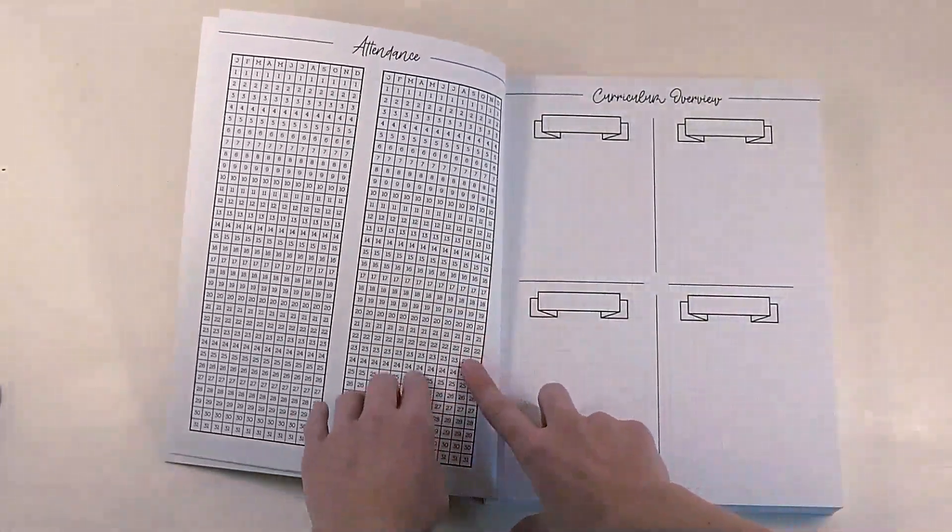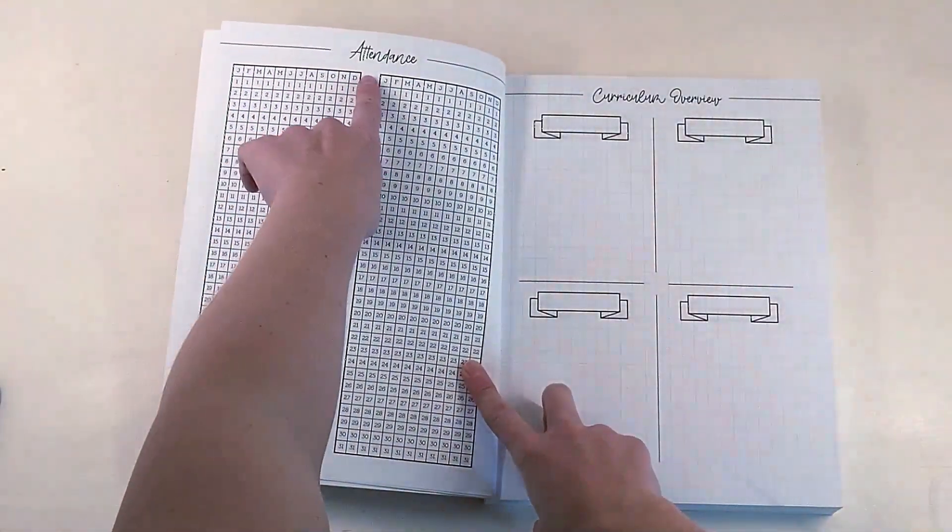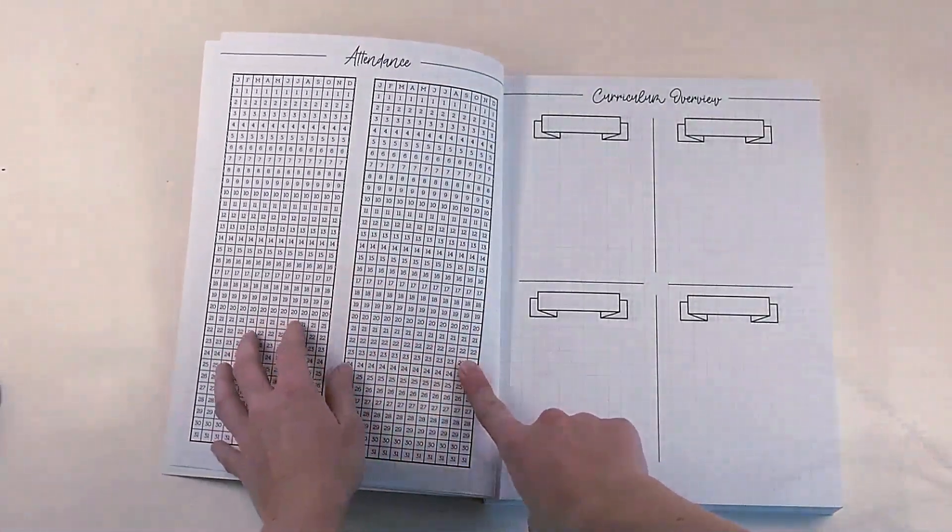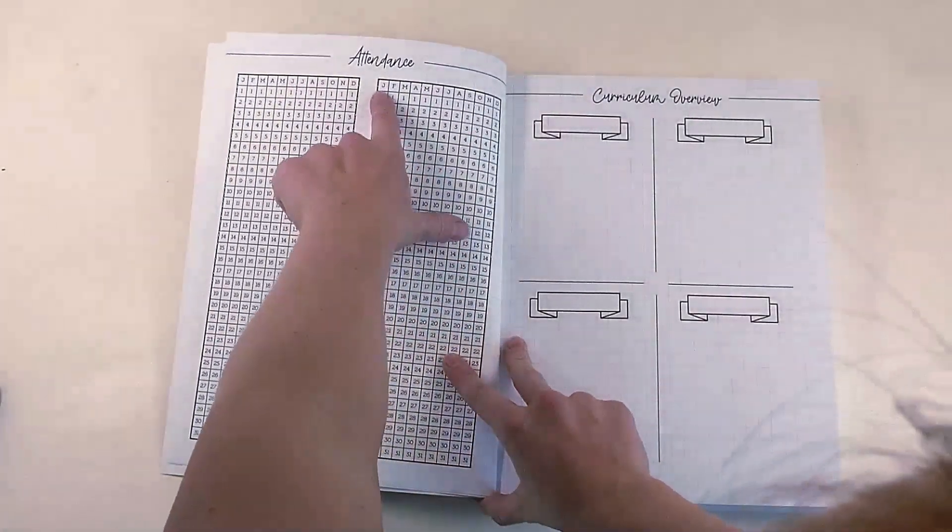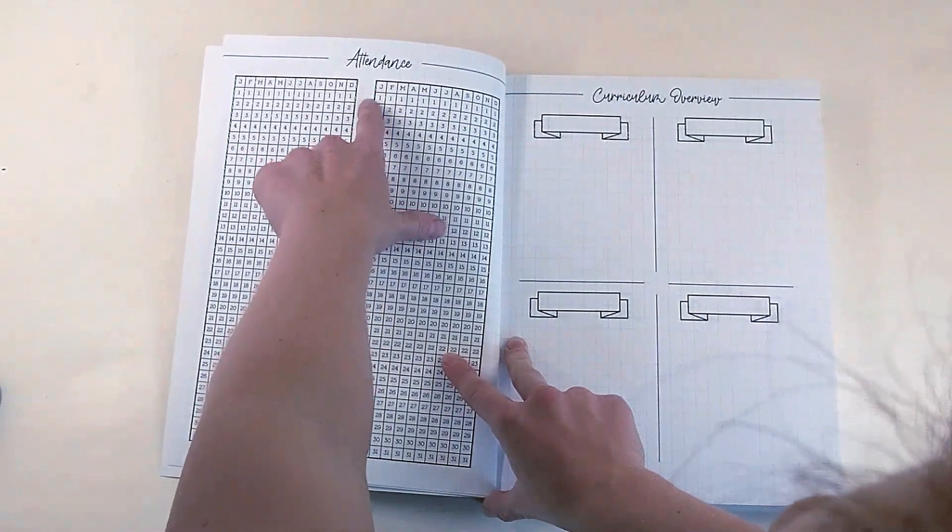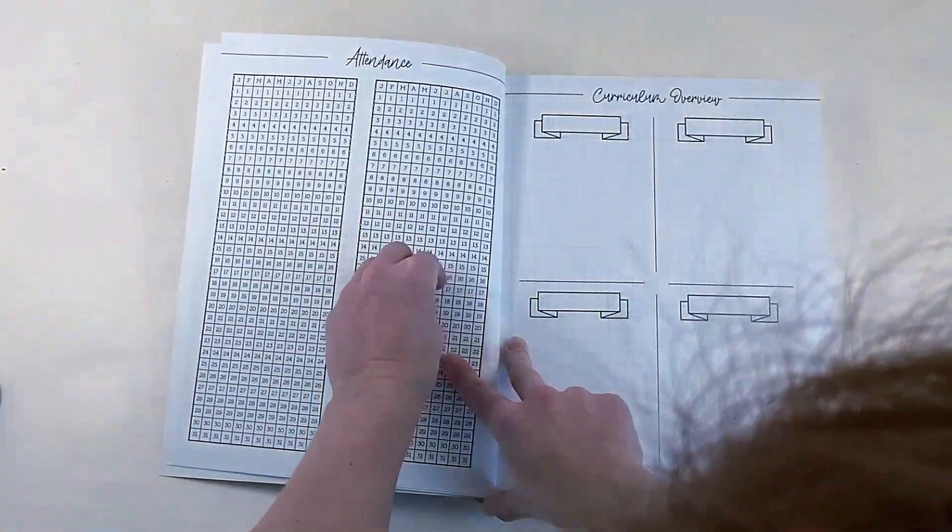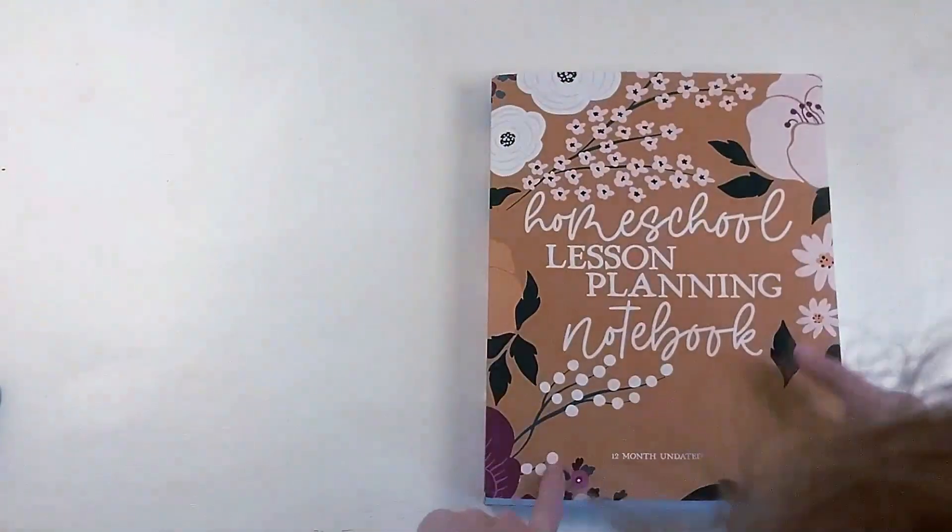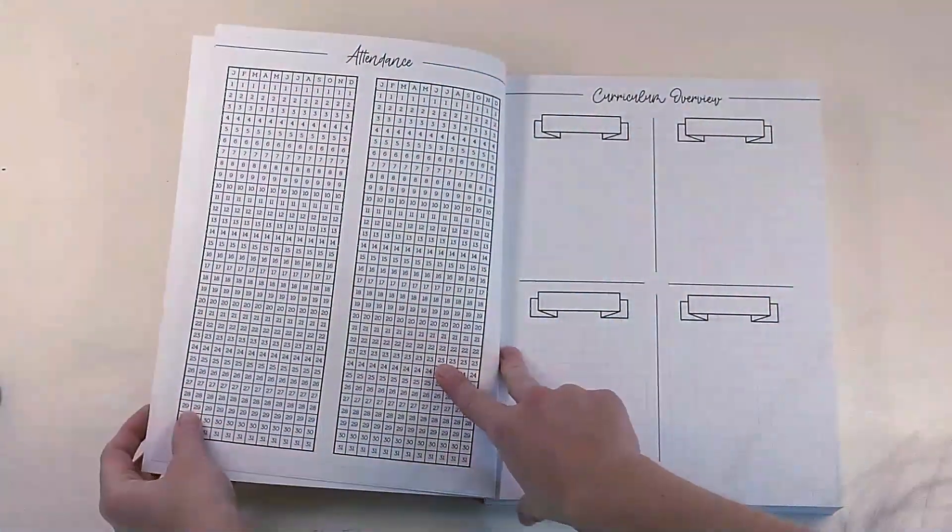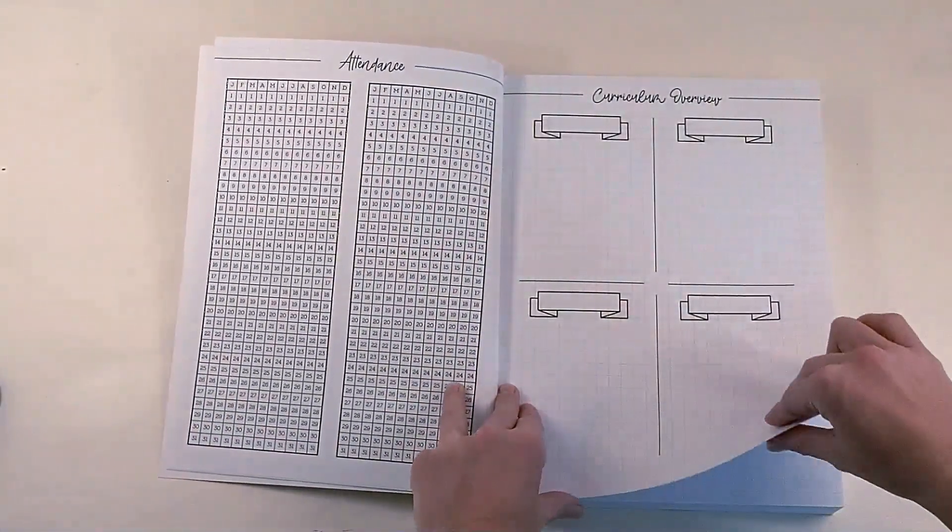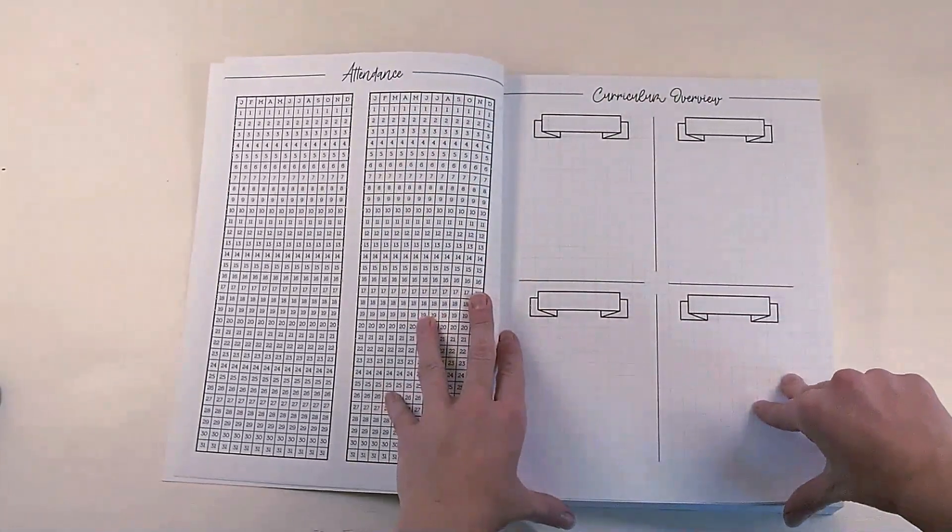So we have the attendance, we have the months of the year, and then the days of the month over here. And there's two copies of this. A lot of families just color in one day for their whole family, so I'm not exactly sure why they included two, maybe for two years. But it says it's a 12-month calendar, I'm not sure. Maybe two students. So there's that, just in case, I guess you get an extra one.